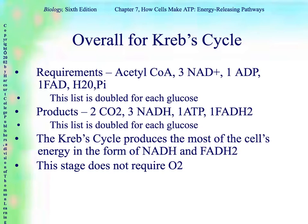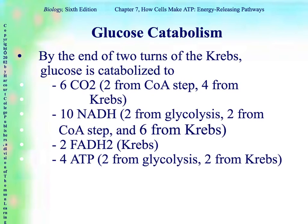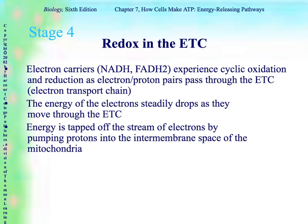You can see that the Krebs cycle produced a lot of energy, but it was in the form of NADH and FADH2. Notice that in the requirements, this stage did not require oxygen. By the end of two turns of the Krebs cycle, glucose was catabolized to six carbon dioxides — two from the coenzyme A step and four from Krebs — 10 NADHs (two from glycolysis, two from the coenzyme A step, and six from Krebs), two FADH2s from Krebs, and four ATPs (two from glycolysis and two from Krebs).